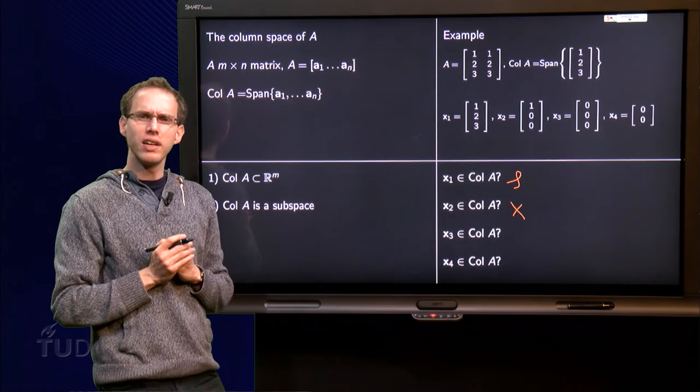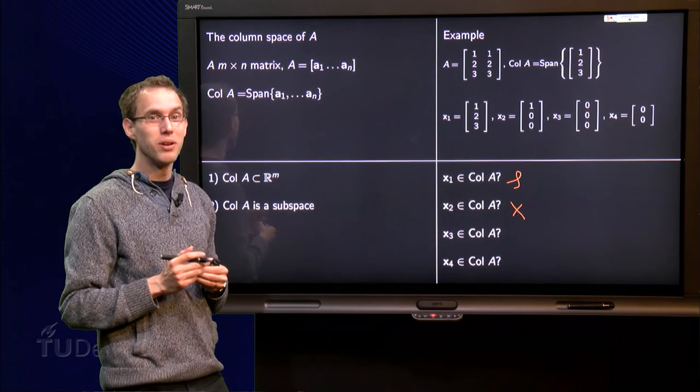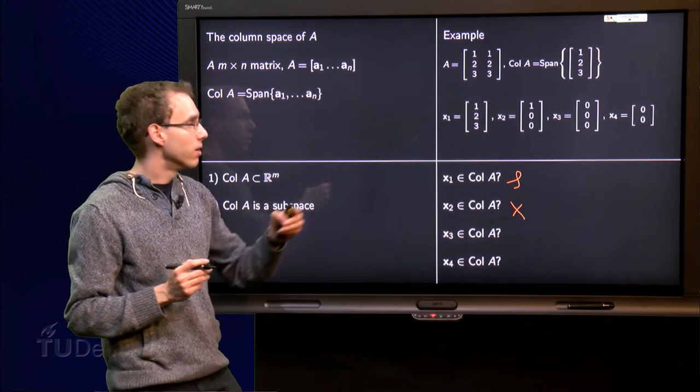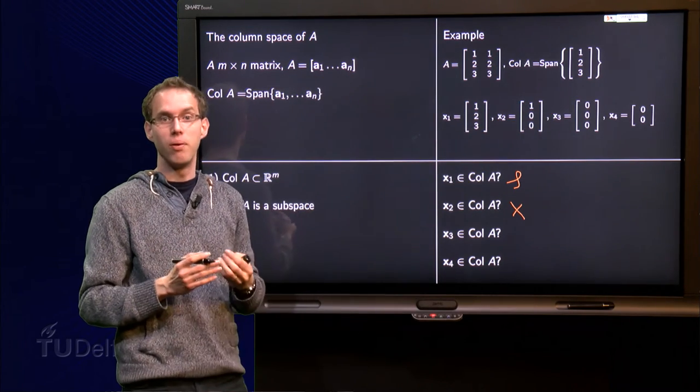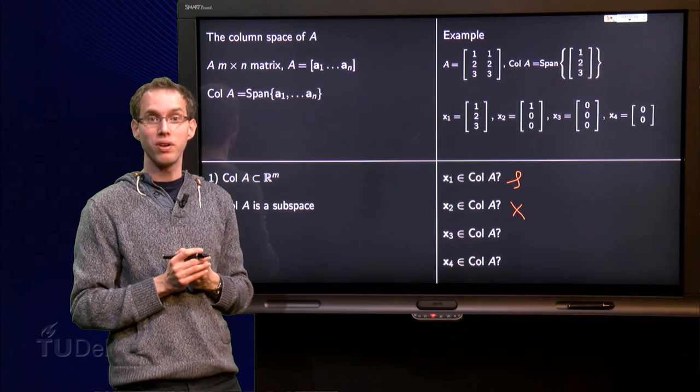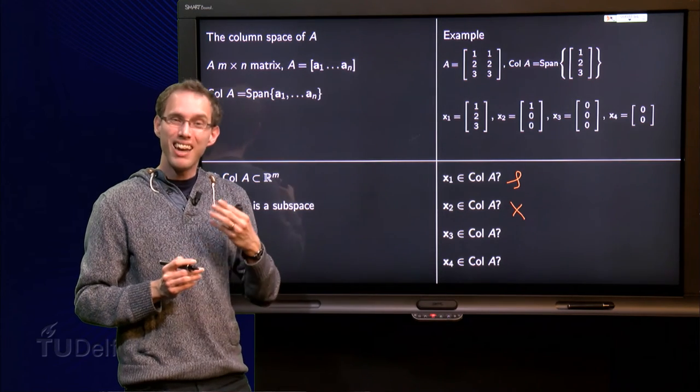What about x3? At first sight, it seems to be not in the column space of A because it is [0, 0, 0]. How can it be a multiple of [1, 2, 3]? Well, in fact it is.